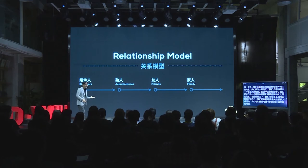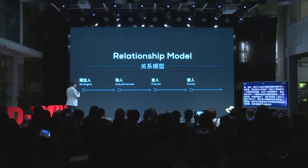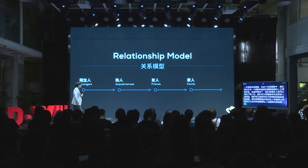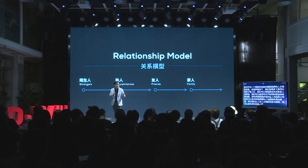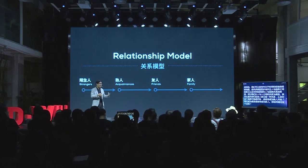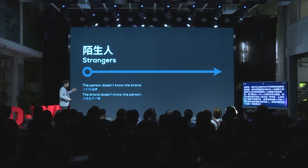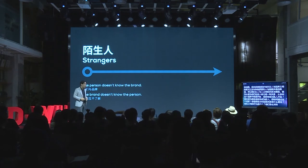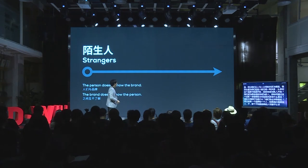We've modeled our relationship model after the relationship between people and people. How can someone have a relationship that starts where they're a stranger to the brand, or they become acquaintances, or friends, or family? How do you move through this progression, and how do both sides feel about it? If a brand and person are strangers, the person doesn't know the brand and the brand might not know the person. How do we get them to move to the next stage where they become acquaintances?